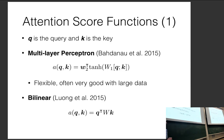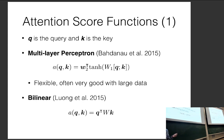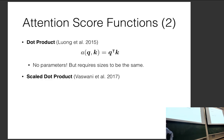Another option is the bilinear function, which multiplies the key vector by a learned matrix W and then takes the dot product with the query. This relaxes two constraints: the matrix doesn't have to be square (allowing different sizes), and it can do a linear transform converting to a different space. It sits in between the MLP — an arbitrarily complex function — and the dot product, which is fully constrained.